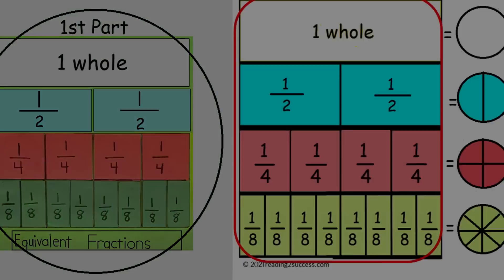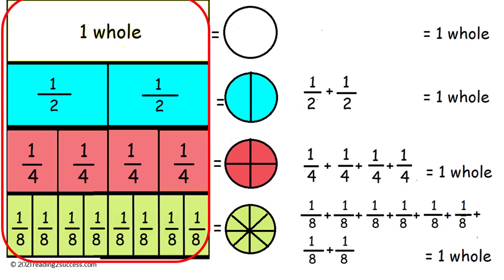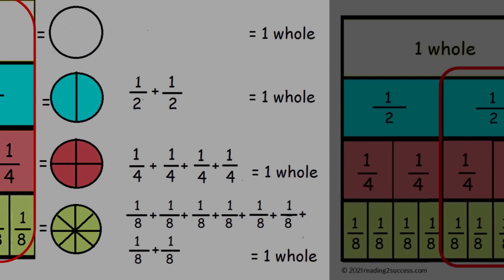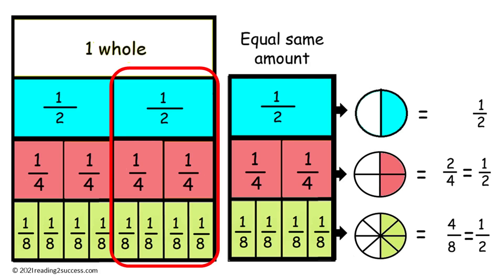In part one, in our equivalency chart, we can see that a whole can be represented by two-halves, four one-fourths, or eight one-eighths. The value for one-half can be shown with one-fourth plus one-fourth, or one-eighth plus one-eighth plus one-eighth plus one-eighth. This is also a great resource to print for kids and have them use as a reference when completing the practice pages. The link for the free template is listed in the description section.